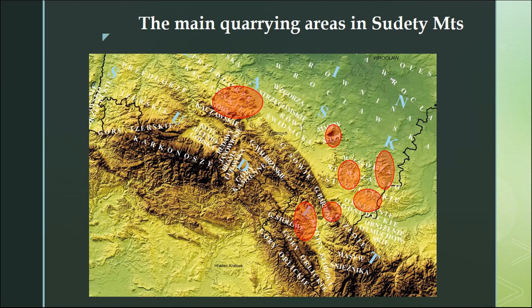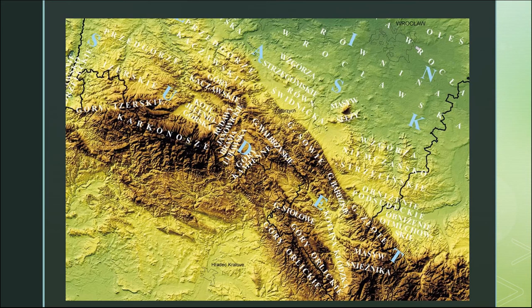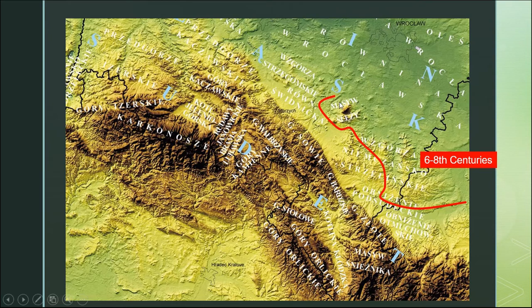We have several places of quarrying activities. Here we have traces of sandstone quarrying, as well as here. In the Ślęża Massif we have traces of granite and serpentine quarrying, and here we have traces of quarrying local schists. During the early Middle Ages and the High Middle Ages we can also observe quarrying activities moving up into the mountains. In the tribal period the main quarrying activities concentrate here, but in early feudalism the quarries are concentrated further into the mountains.